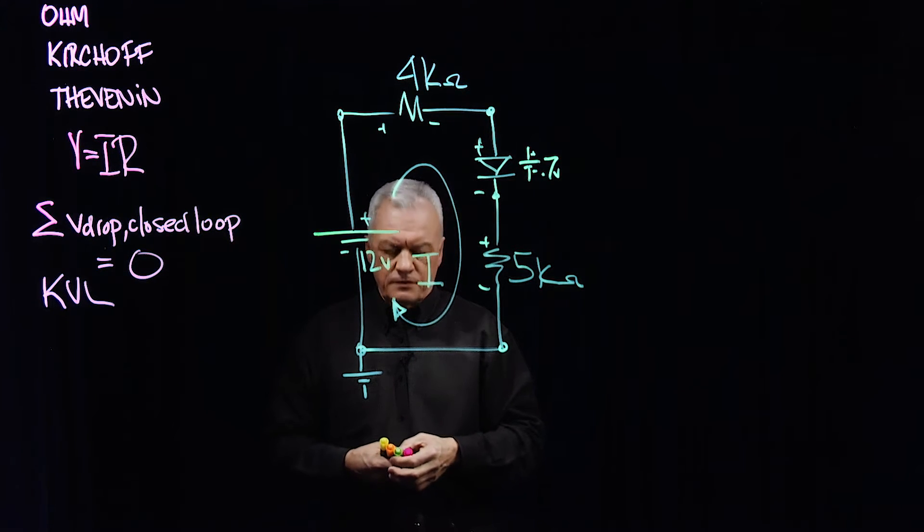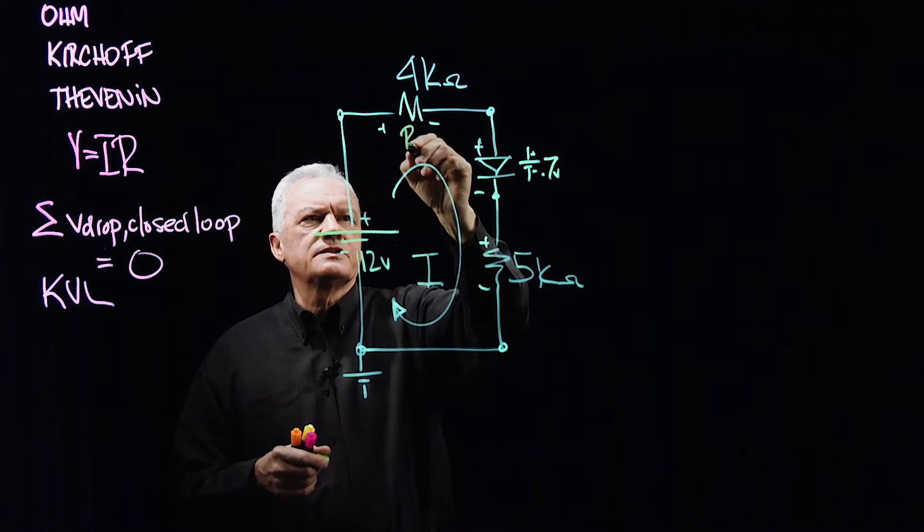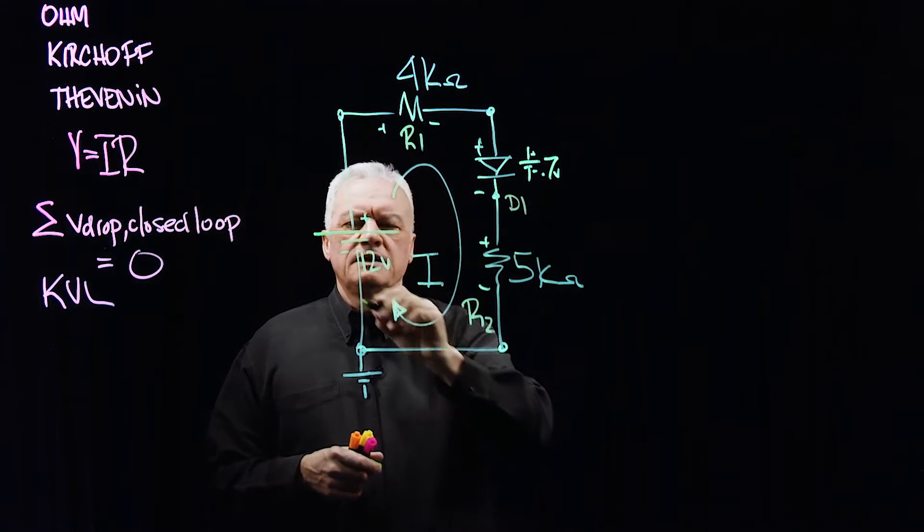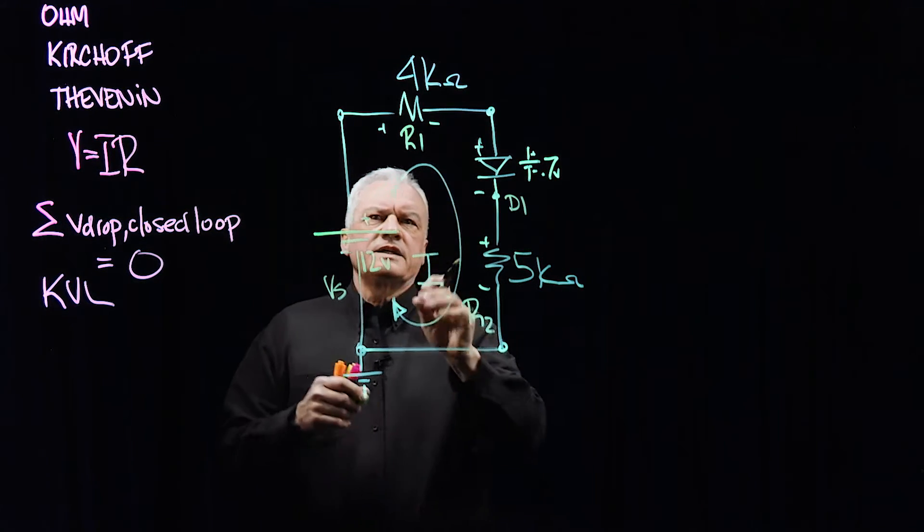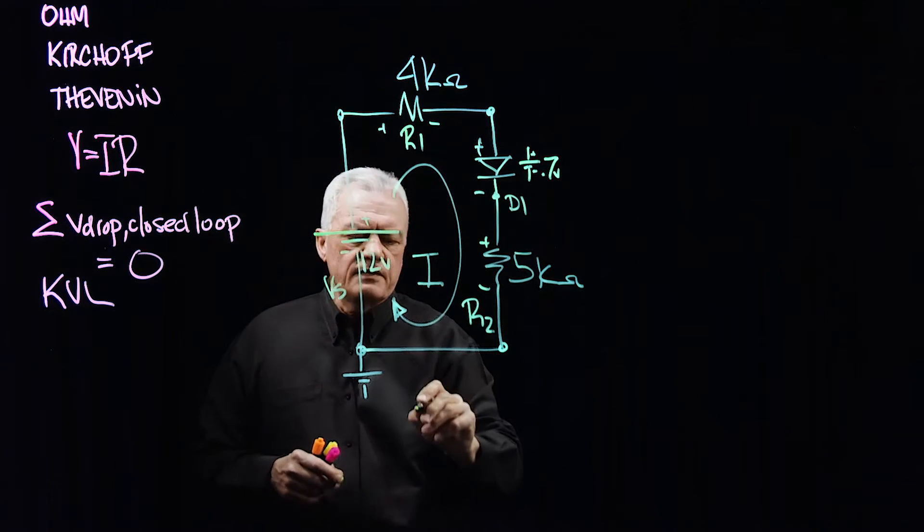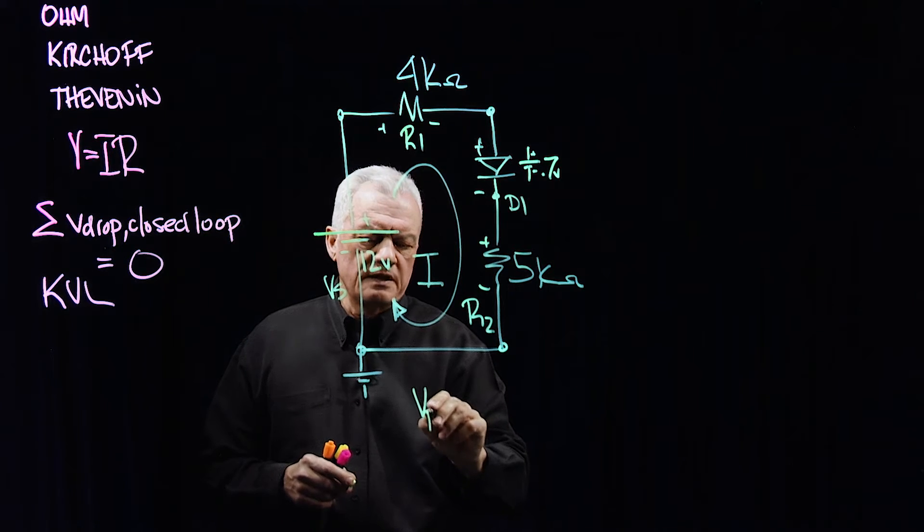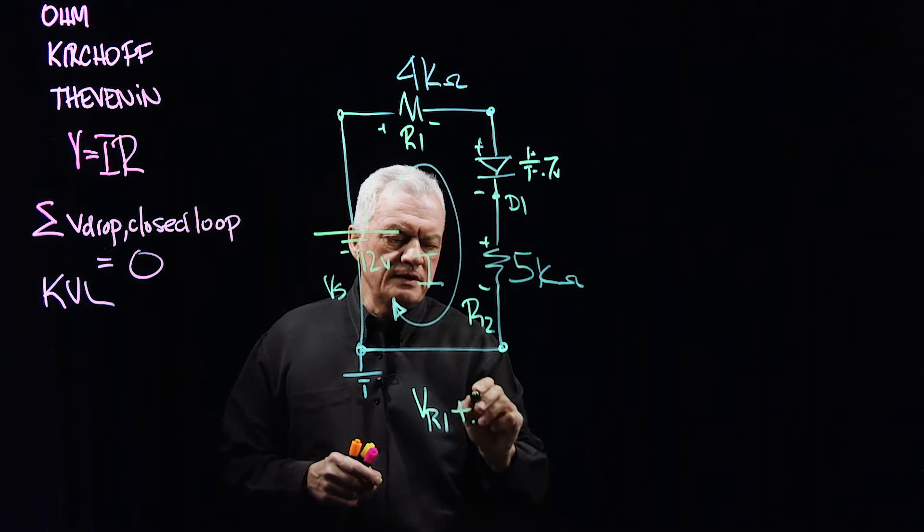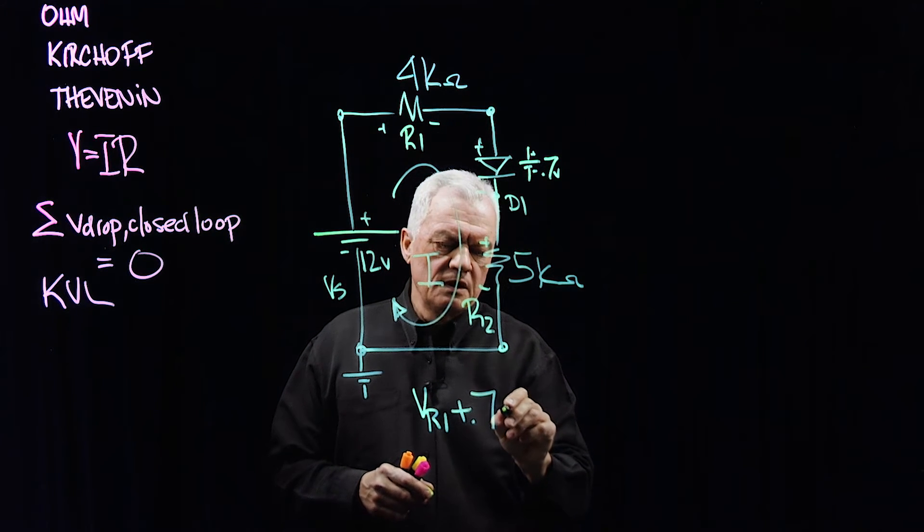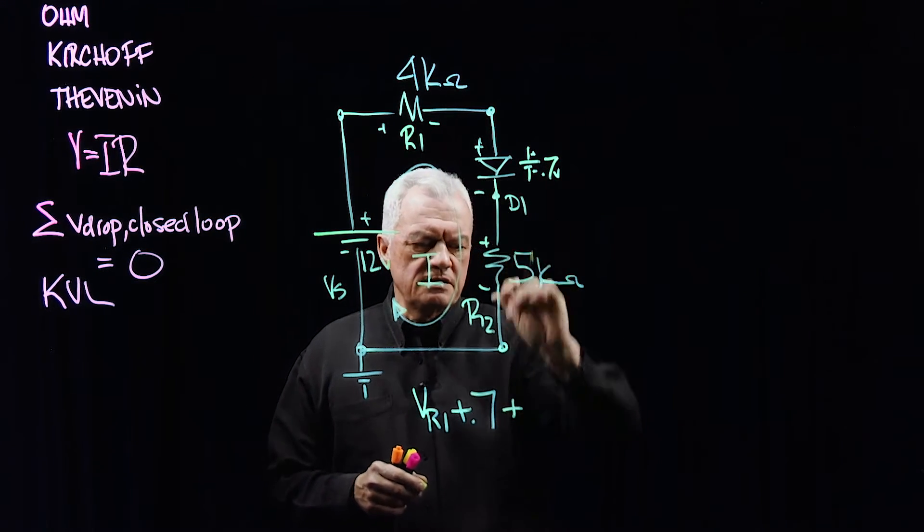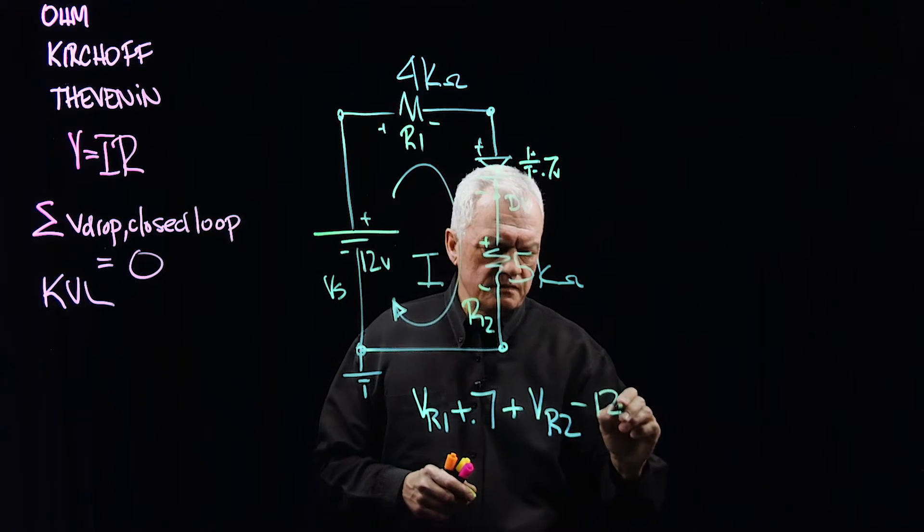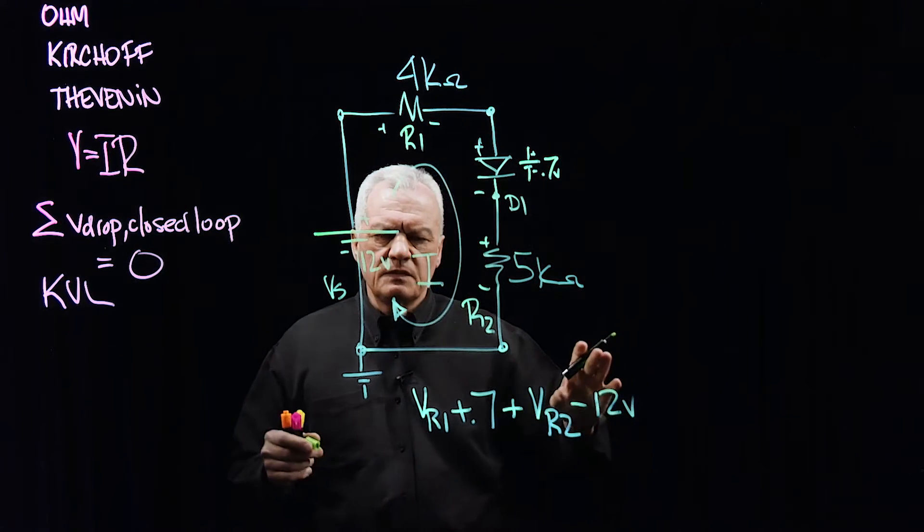Let's use Kirchhoff's voltage laws. I'm just going to go back here. This is resistor one, this is resistor two, this is diode one, this is our source voltage. If we look at this, the voltage, the sum of the voltage around a closed loop is equal to zero. We should have the voltage from resistor one plus the 0.7, plus the voltage drop across resistor two, minus the 12 volts will equal zero.